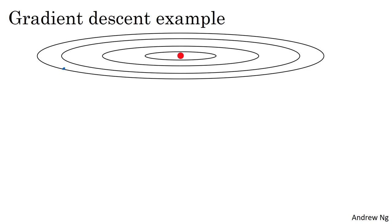But now you're on the other side of this ellipse. And if you take another step of gradient descent, maybe end up doing that, and then another step, another step, and so on. And you see that gradient descent will take a lot of steps and slowly oscillate toward the minimum. And these up and down oscillations slow down gradient descent and prevent you from using a much larger learning rate.